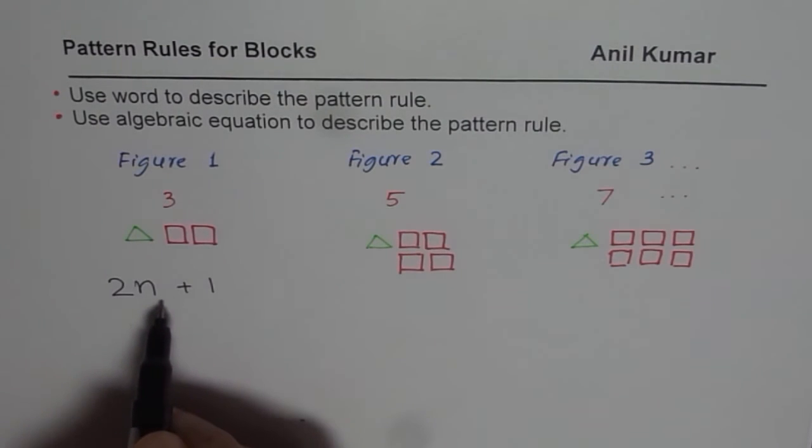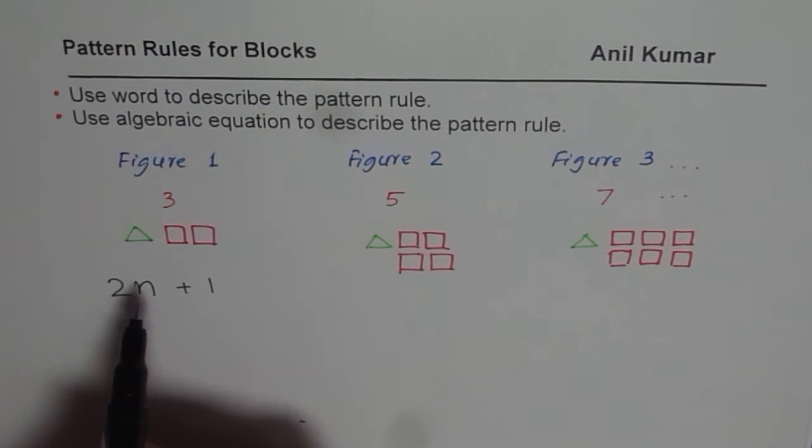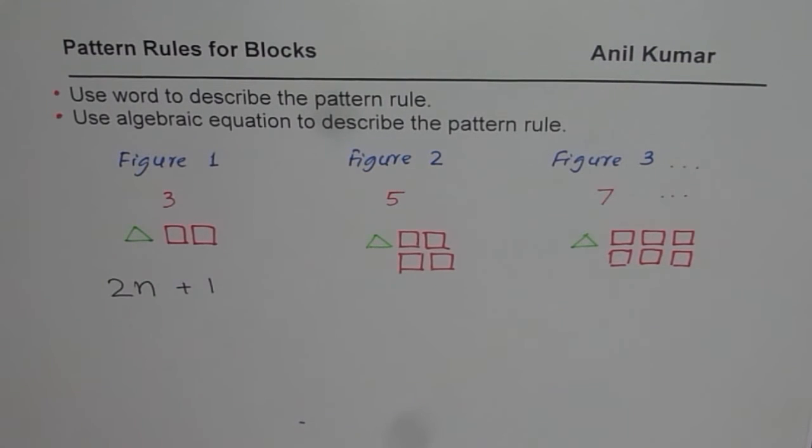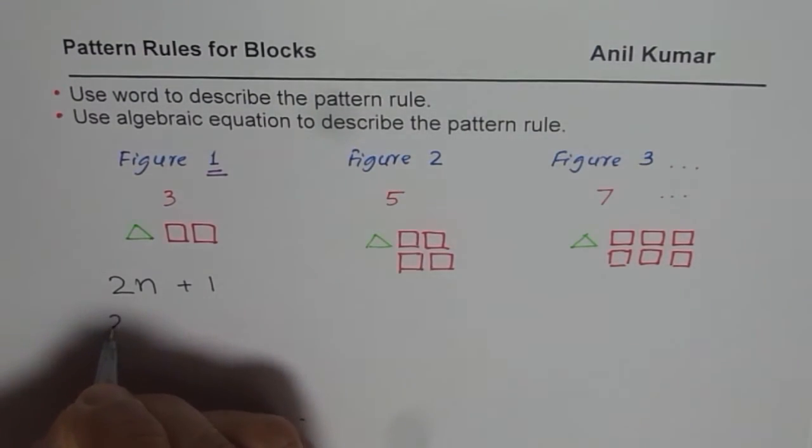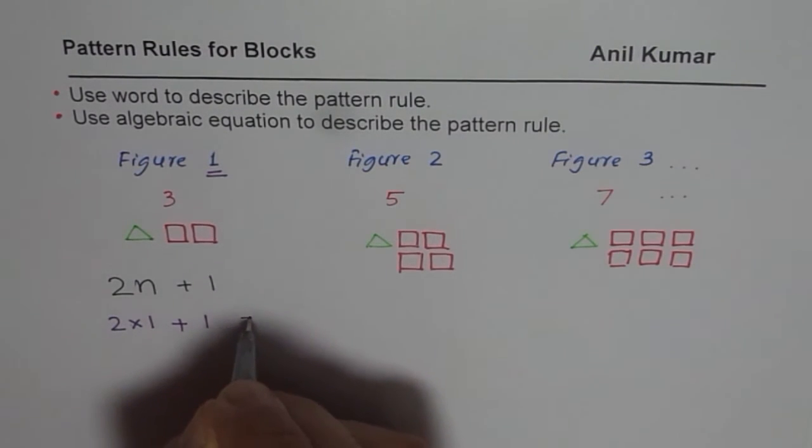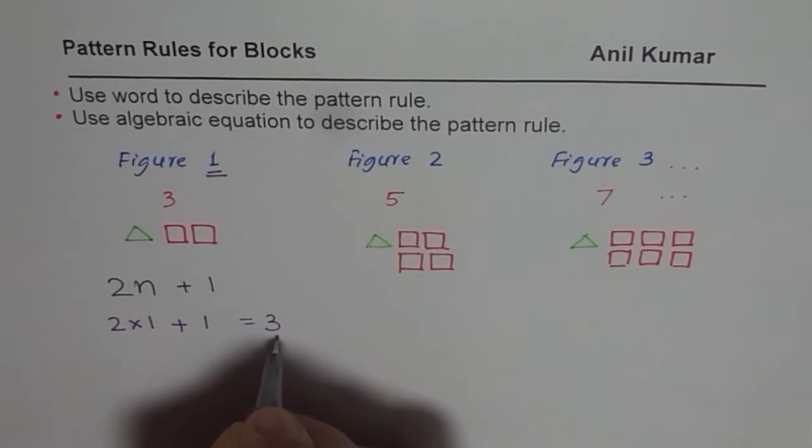Now, if I use this expression, two times n plus one. And if I write n as equals to one, let me do the calculation and show you. Figure number is one for me. So if I write two times one plus one, what do I get? Two times one is two. Two plus one is three. I get three.